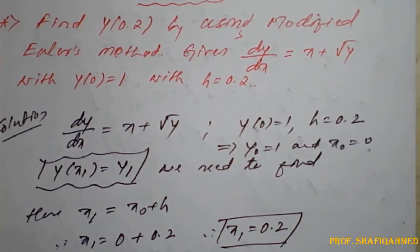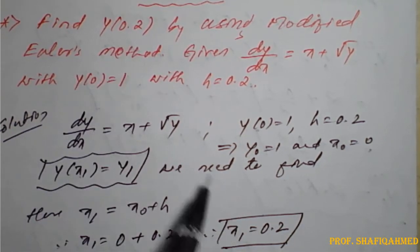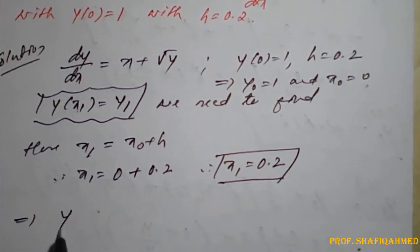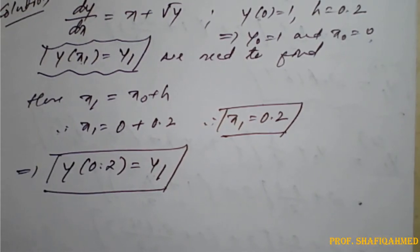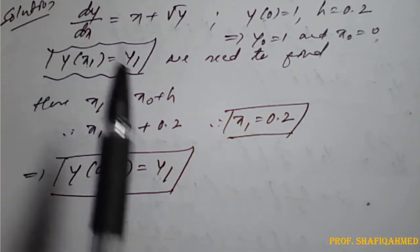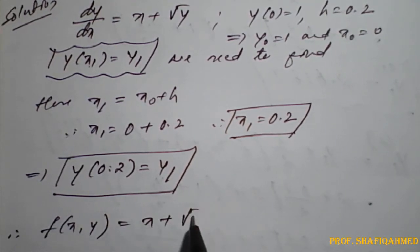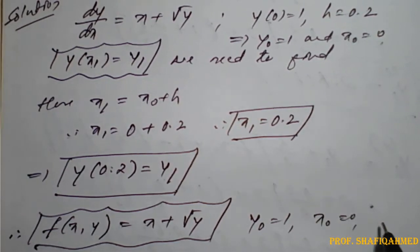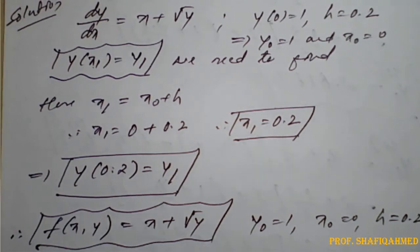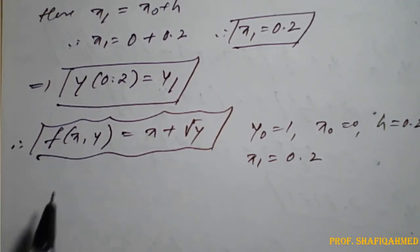They have asked us to find y(0.2), which is y(x1). Since x1 = 0.2, this matches our requirement. Therefore we need to find y(0.2) = y1. We will calculate this first using Euler's formula, then using the modified Euler's formula. The function f(x, y) = x + √y, with x0 = 0, y0 = 1, h = 0.2, and x1 = 0.2.